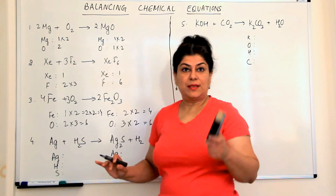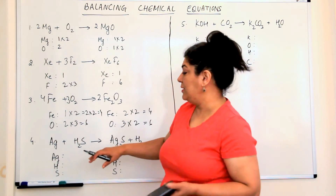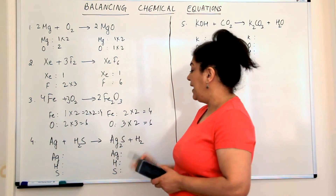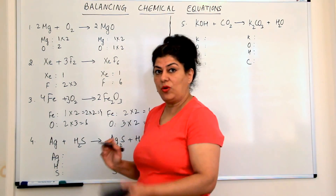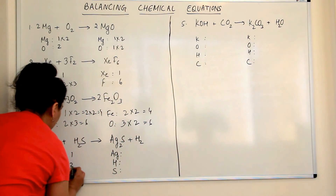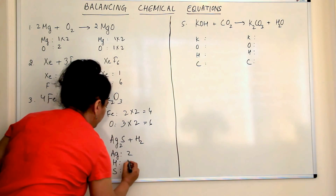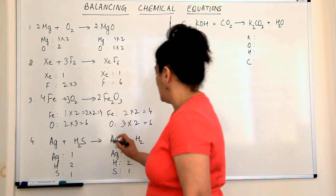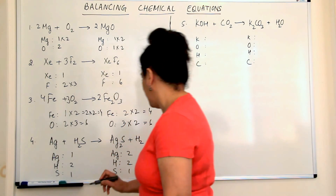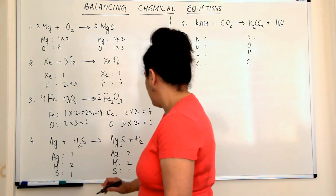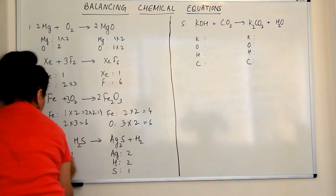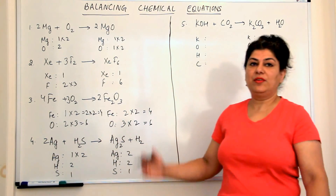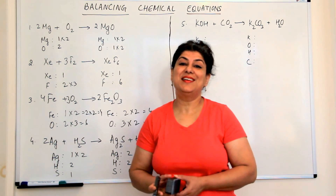Let's do one more example. Silver combines with H₂S to give silver sulfide and hydrogen. Writing the element counts: reactants have one silver, two hydrogens, one sulfur; products have two silvers, two hydrogens, and one sulfur. Silver is one on the left and two on the right, so we multiply the reactant side by two, giving two silvers, two hydrogens, and one sulfur. Hydrogens and sulfurs were already balanced. Therefore, this is a balanced equation.